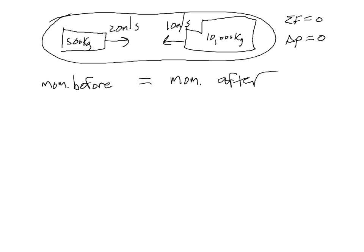So, before the crash, we have the momentum of the car plus the momentum of the truck. And then after the crash, they're stuck together, so they have to have the same momentum. That would be the momentum of the car and the truck together.